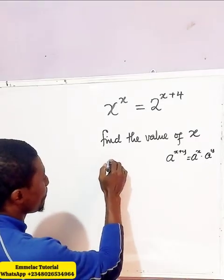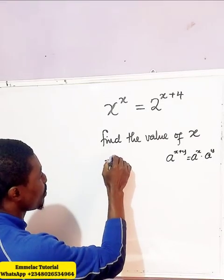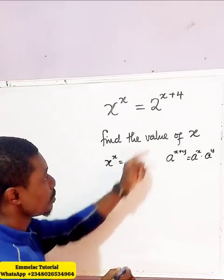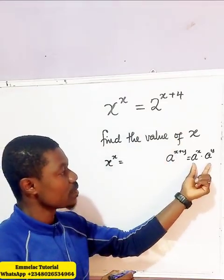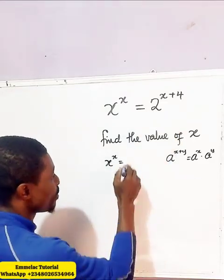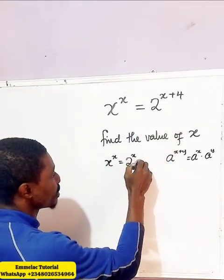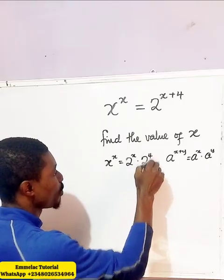So here we have x raised to the power of x equals — applying that pattern — 2 raised to the power of x, times 2 raised to the power of 4.